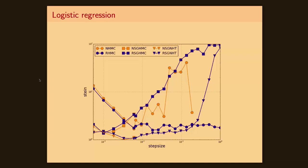We test our stochastic gradient MCMC models over logistic regression examples, showing that in terms of Stein discrepancy, the lower the better, the relativistic algorithms are much more stable and achieve better mixing.